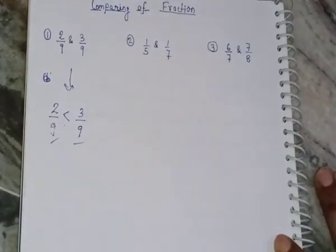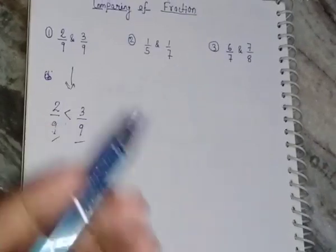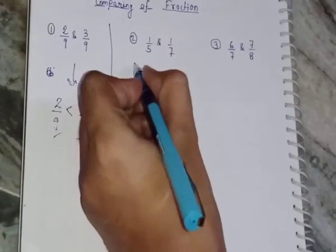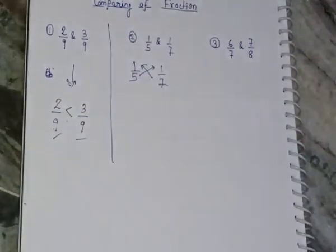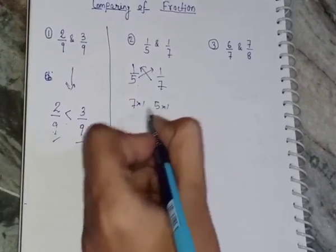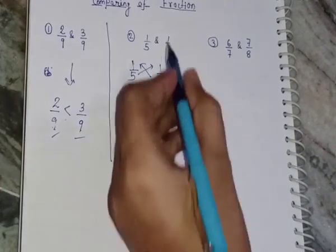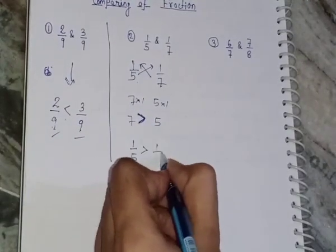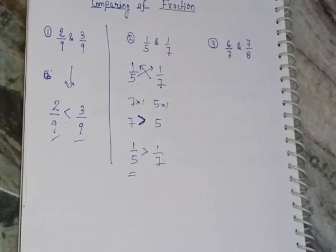Now what if the denominators are different? You have two options: either take the LCM to make the denominators the same, or use the simplest method — cross multiply. For example, comparing 1 by 5 and 1 by 7, you cross multiply: 7 times 1 is 7, and 5 times 1 is 5. Since 7 is greater than 5, the fraction 1 by 5 is greater than 1 by 7.